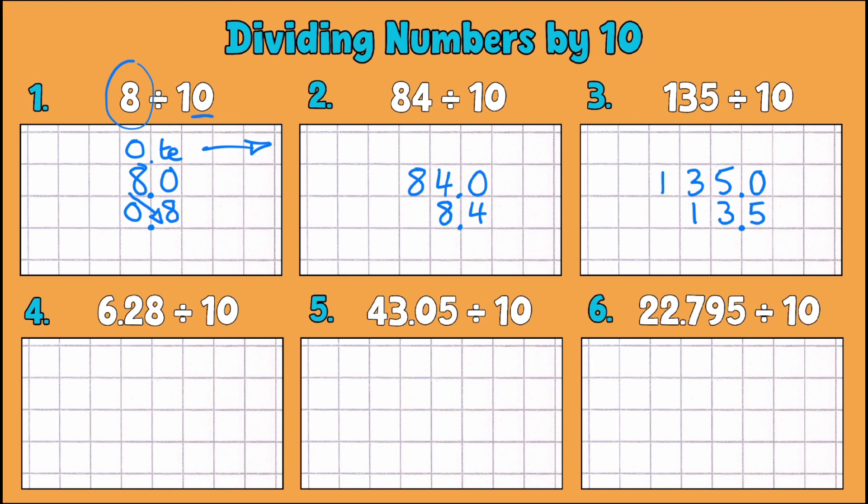So one thing when you're doing the whole numbers by 10 and you're dividing those is to make sure that you put that decimal place in, because what that does is it gives it a bit of an anchor point that you can move all those numbers around.